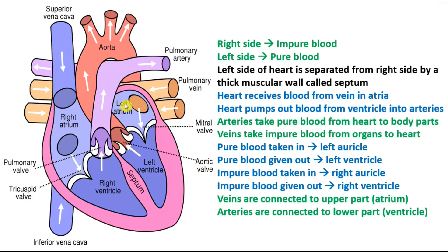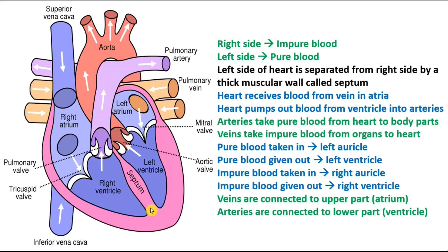To understand the flow of blood through the four chambers, keep a few points in mind. The right side always has impure blood, which is rich in carbon dioxide, and the left side has pure blood. The left side is separated from the right side by a thick muscular wall called the septum. The heart always receives blood from veins into the upper chambers, the atria, and pumps blood out from the lower chambers, the ventricles, into the arteries.